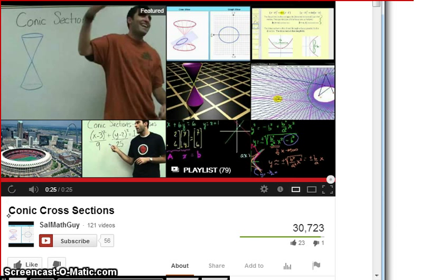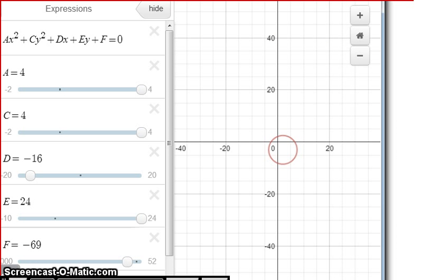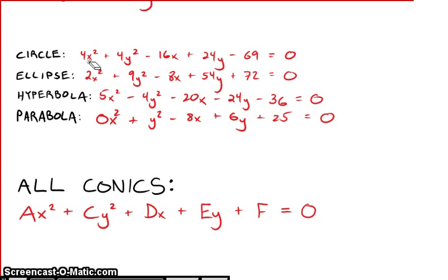We can demonstrate this with some graphing software from the World Wide Web. What we have here is a program that allows us to put in a formula, but then put in these different sliders that can change the value of each of our coefficients. So we're set up for A, C, D, E, and F. What I have in here are the coefficients necessary for the circle equation that we started with at the very top.